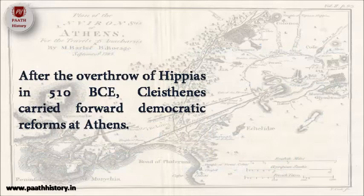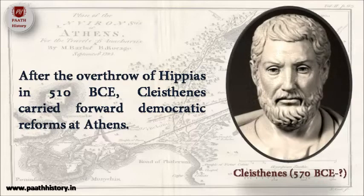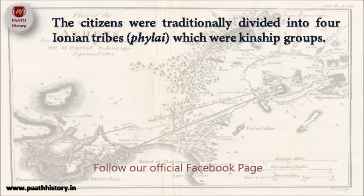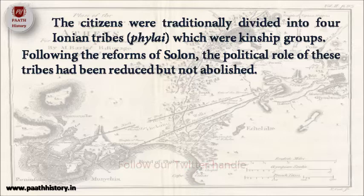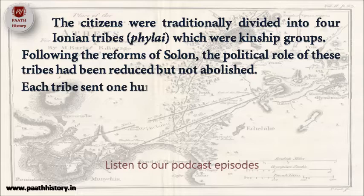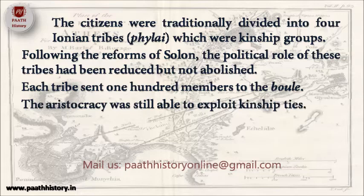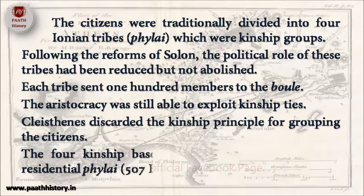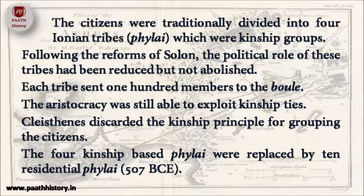After the overthrow of Hippias in 510 BCE, Cleisthenes carried forward democratic reforms at Athens. The citizens were traditionally divided into four Ionian tribes or Philae, which were kinship groups. Following the reforms of Solon, the political role of these tribes had been reduced but not abolished, and each tribe sent 100 members to the Bole. The aristocracy was still able to exploit kinship ties. Cleisthenes discarded the kinship principle for grouping citizens, and the four kinship-based Philae were replaced by ten residential Philae in 507 BCE.